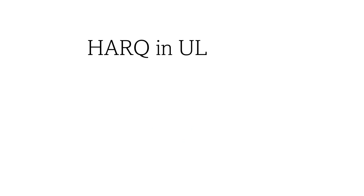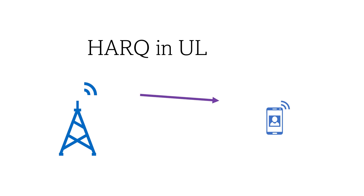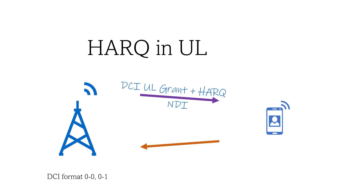In HARQ uplink, the DCI sends the uplink grant, and then the UE sends the transport block via PUSCH. The checksum is calculated at the gNB. If it is a NACK, the gNB will schedule the retransmission and the NDI will be used to inform the UE.